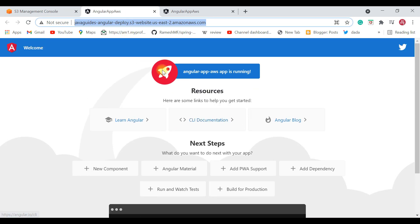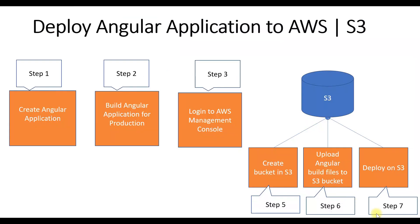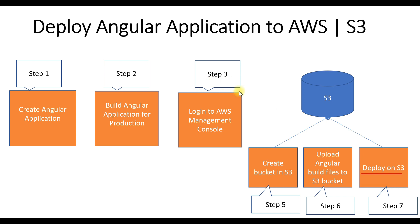We have successfully created the Angular application and deployed it on AWS step by step. To recap: we created a new Angular application, built it for production, logged into the AWS Management Console, created a bucket in S3, uploaded all Angular build files to the bucket, and deployed them. If your Angular application is bigger, you can follow the same steps. Thanks for watching — subscribe to the channel so you get notified of new videos!